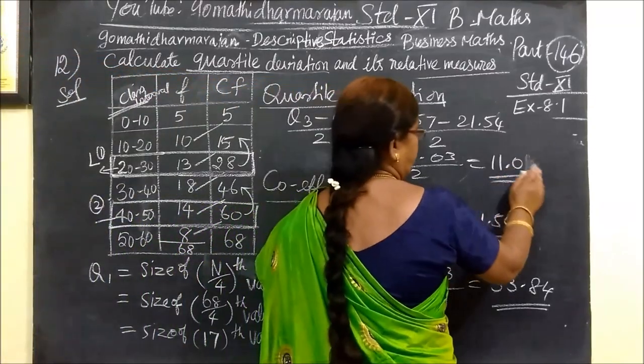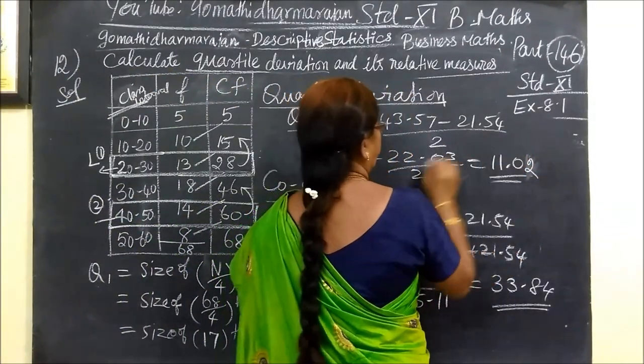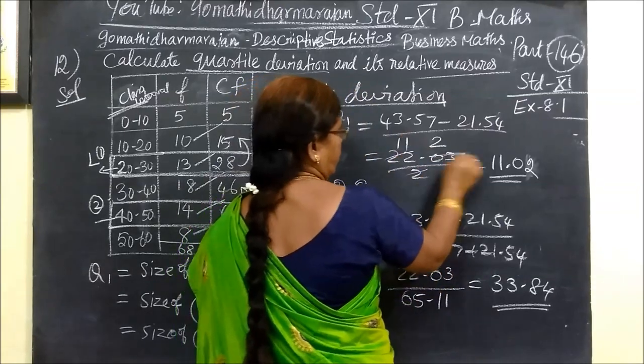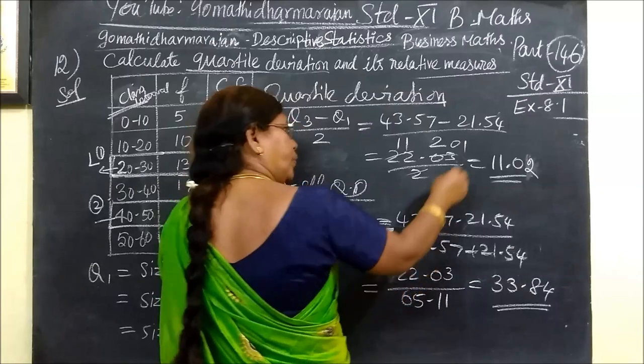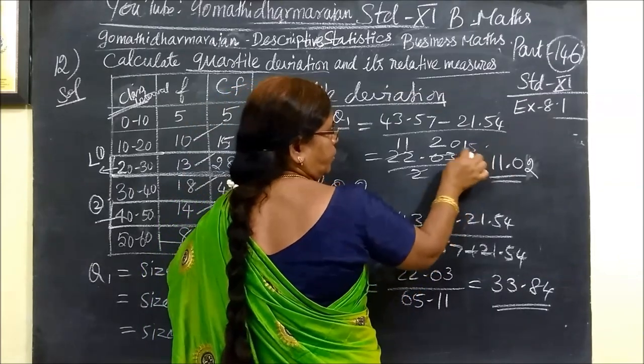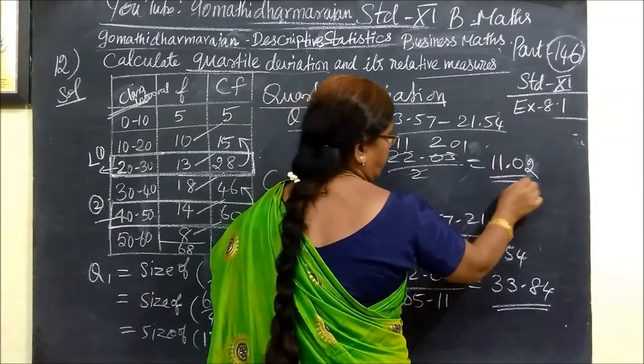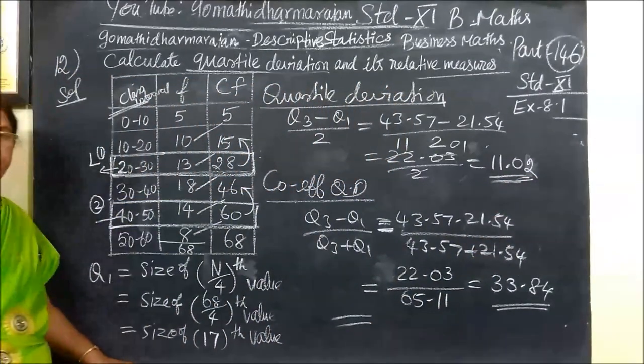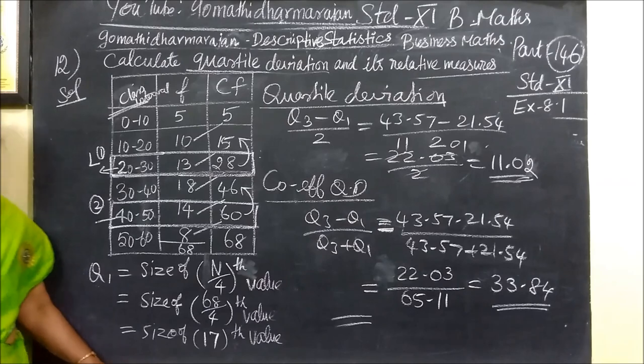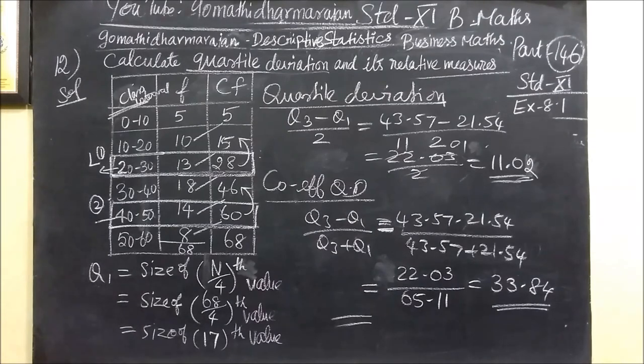The final answers are: quartile deviation equals 11.04, and coefficient of quartile deviation equals 0.338. I hope you understand this calculation.